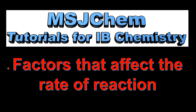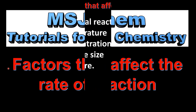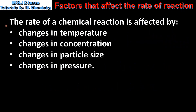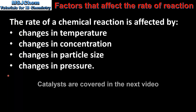This is MSJChem. In this video I'll be looking at the factors that affect the rate of reaction. The rate of a chemical reaction is affected by the following changes: changes in temperature, changes in concentration, changes in particle size, and changes in pressure. The rate of a chemical reaction can also be affected by the use of a catalyst.